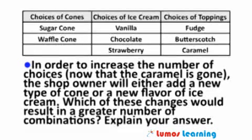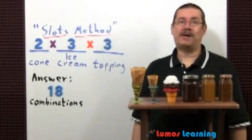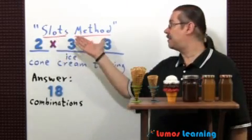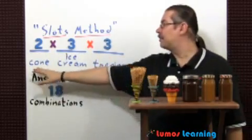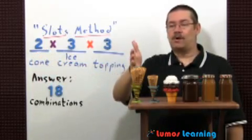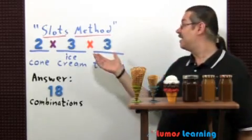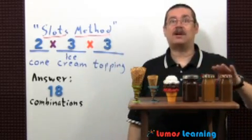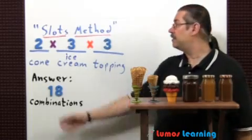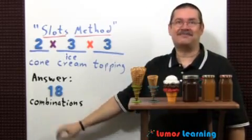To find the total number of possible combinations, you can use the slots method. Draw slots that correspond to each type of cone, flavor, ice cream, and topping. There are two types of cones, waffle and sugar, three flavors of ice cream, vanilla, chocolate, strawberry, and three toppings, fudge, butterscotch, and caramel. If you multiply the numbers together, two times three times three, you get the answer of 18 combinations.